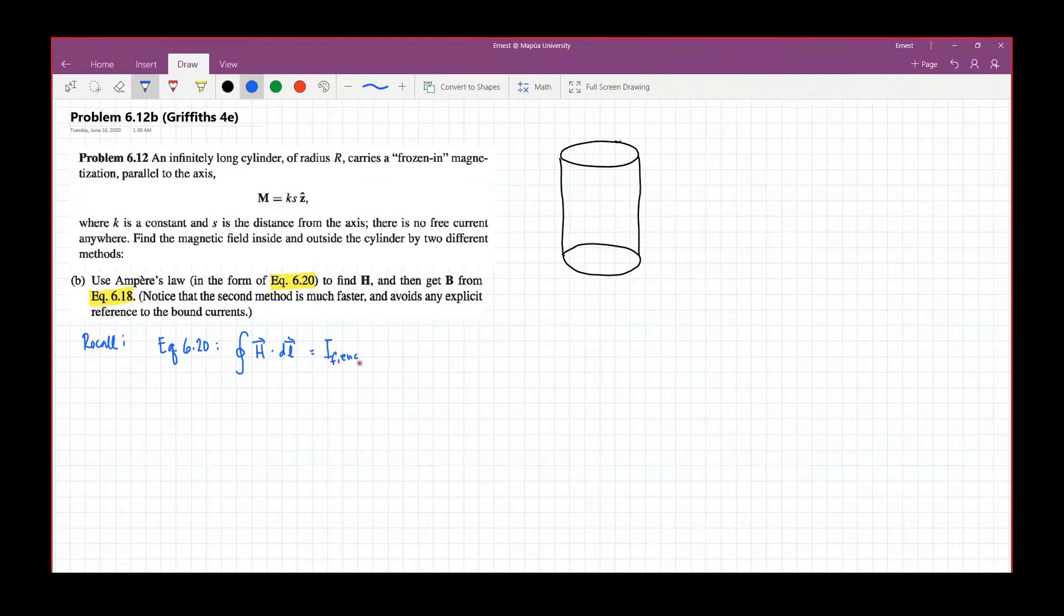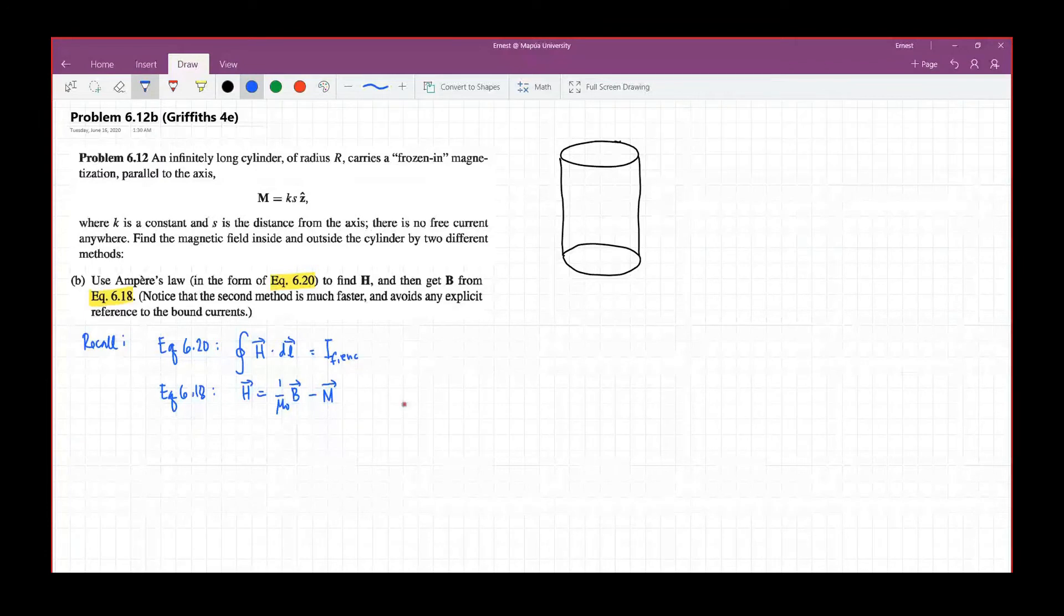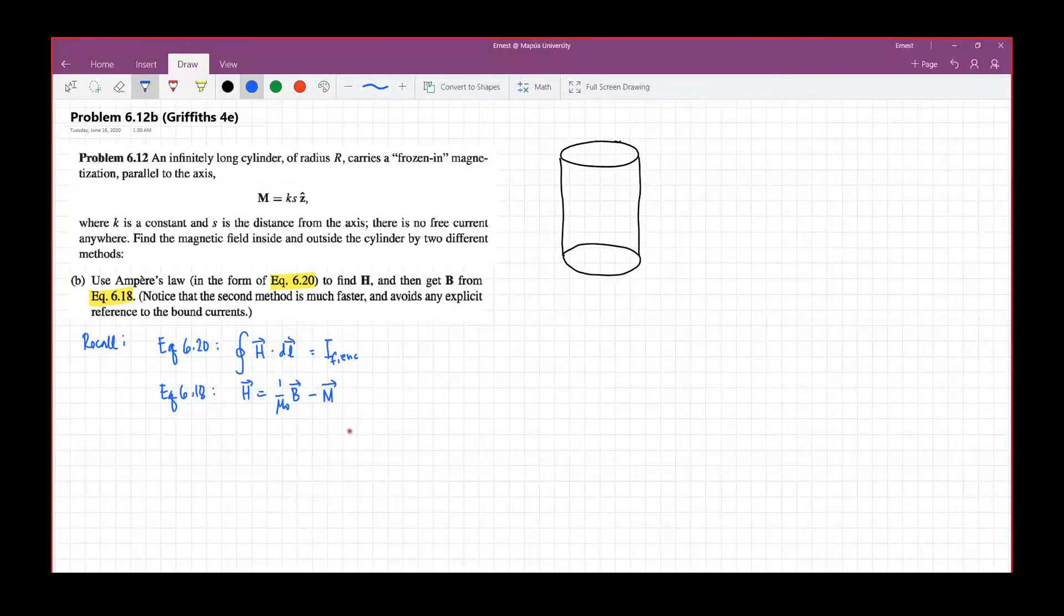Where your I enclosed should be the free current. And then equation 6.18 will just be the relationship between the auxiliary field, the magnetic field, and the magnetization. From this equation, we can see that the auxiliary field, the magnetic field, and the magnetization align on the same axis or along the same direction.